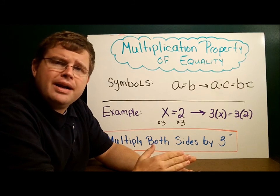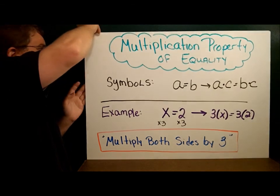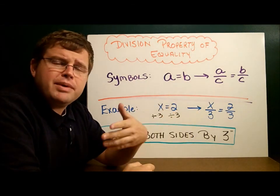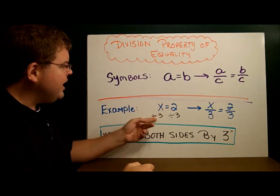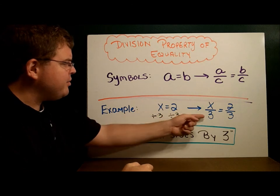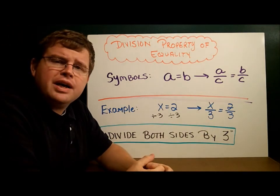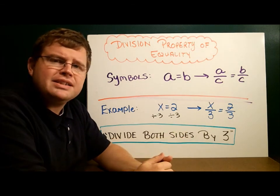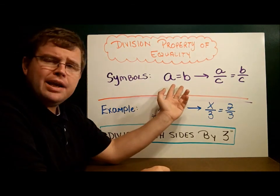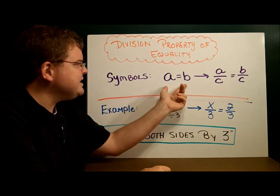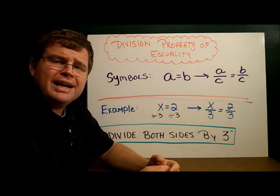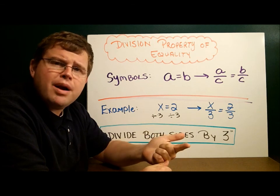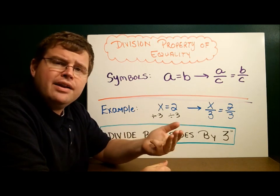The fourth property is the division property of equality — it's the property of equality because we're doing it to both sides, and division because we're dividing. If x equals two and I divide each side by three, x divided by three equals two divided by three. In symbolic notation, if a equals b, then a divided by c equals b divided by c.